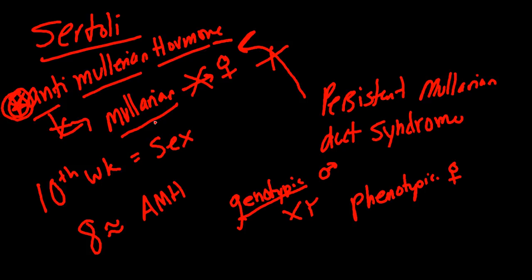Everybody starts with a Müllerian duct — everybody starts as a female or with female capabilities. However, it's that SRY sex-determining region on that Y chromosome that's going to give rise to the Sertoli cells, which produce a hormone that blocks that inherent Müllerian pathway that everybody has. It's going to block that Müllerian pathway so we don't become females.